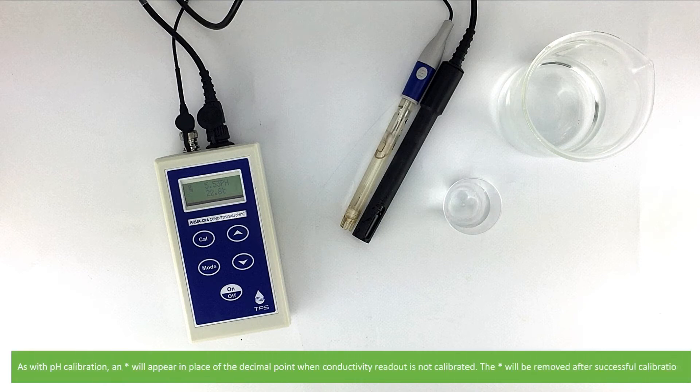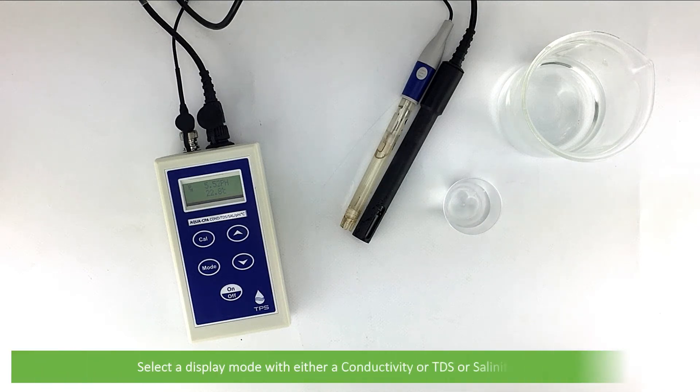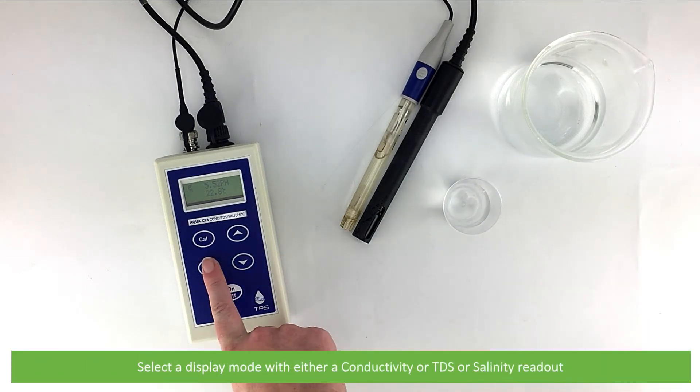As with pH calibration, an asterisk will appear in place of the decimal point when conductivity readout is not calibrated. This asterisk will be removed after successful calibration. Select a display mode with either a conductivity, TDS or salinity readout.